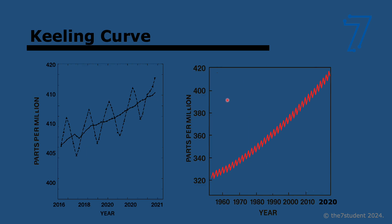The Keeling curve looks at atmospheric CO2 concentrations. Two main things to know: first, annual fluctuations — every year there is an increase in CO2 concentration between October and May. This is because of global imbalances in photosynthesis between the northern and southern hemispheres, which change with the seasons. Second, the long-term trend shows an increase in atmospheric CO2 over time, fitting into the idea of climate change and human causation.